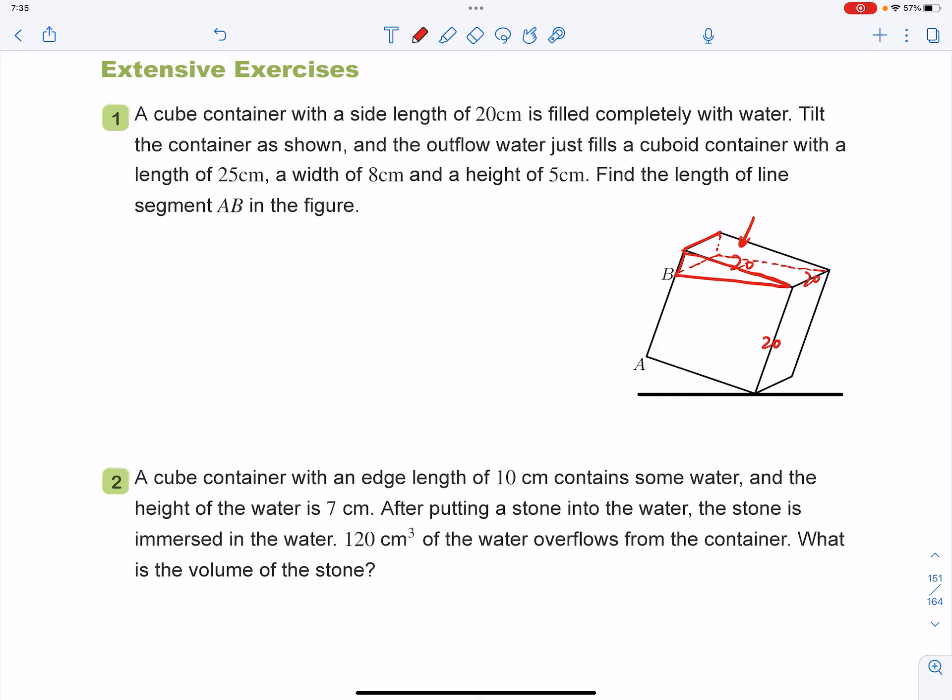But do we know the volume of that part? You see, it tells you the outflow water fills a cuboid container with 25, 8 and 5 completely. So the volume of outflow water equals to 25 times by 8 times by 5, right? And you will see that equals to a thousand cubic centimeters.